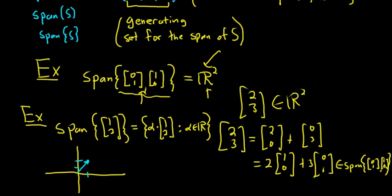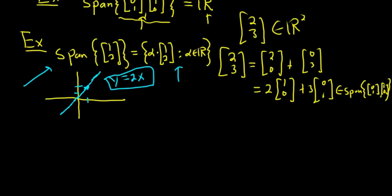So if we keep multiplying it by alpha, where alpha is a real number, the length of this vector will vary, and we'll end up getting this line. This is the line y equals 2x. So this is another way to write the graph of the line y equals 2x. It's a span of a single vector. So the span of a set of vectors is the set of linear combinations of all those vectors.